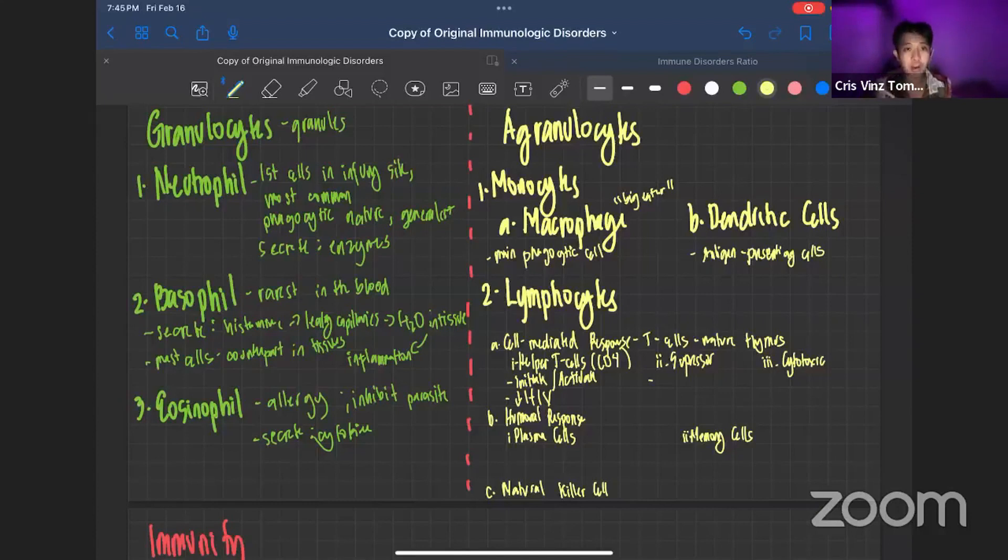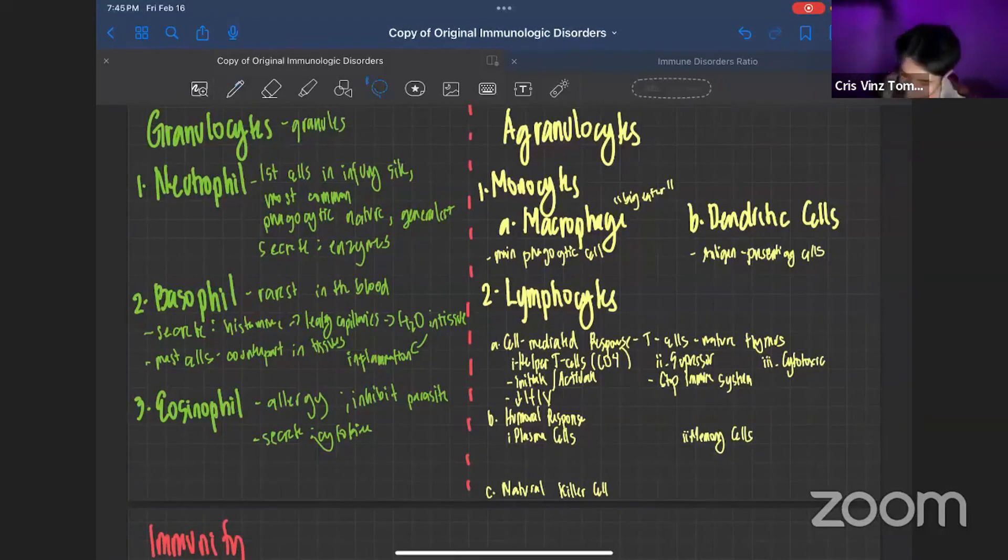Our next cell is our suppressor cell. They stop the immune system. Basically, this is the negative feedback of our T-cells. They're saying to stop already, you're doing too much. Stop it already. The helper T-cells, they're our gossip. They spread the news that there's a problem in our system. Suppressor T-cells say stop it already. Negative feedback of our immune system.